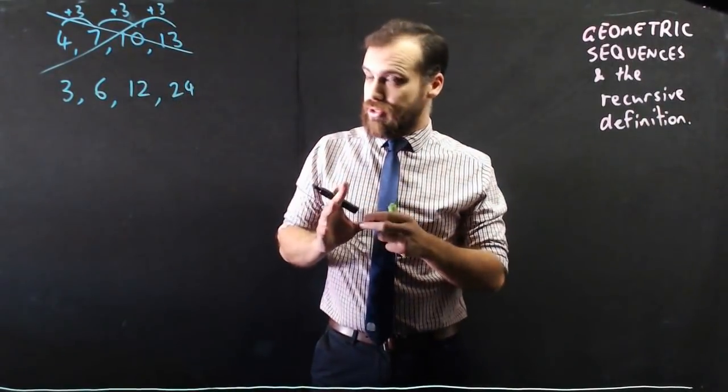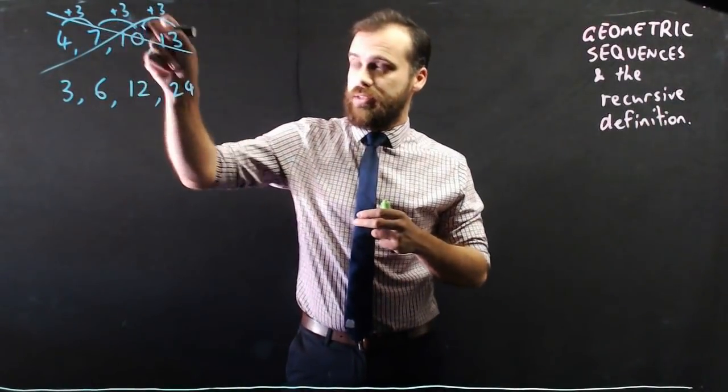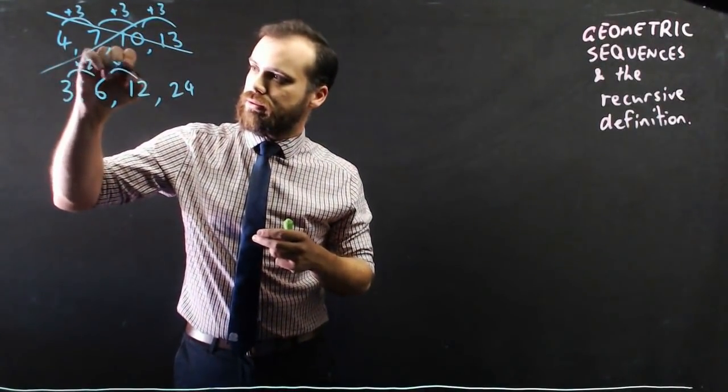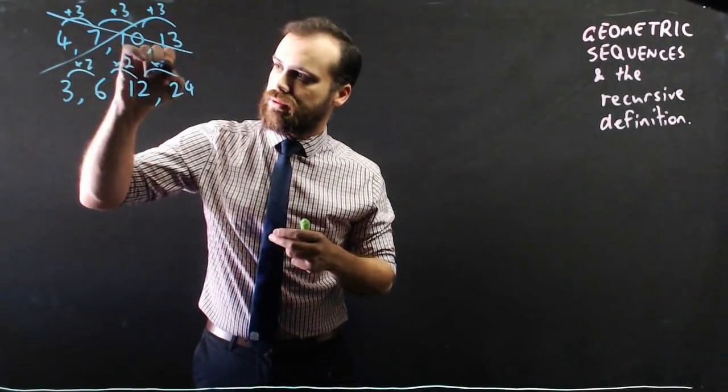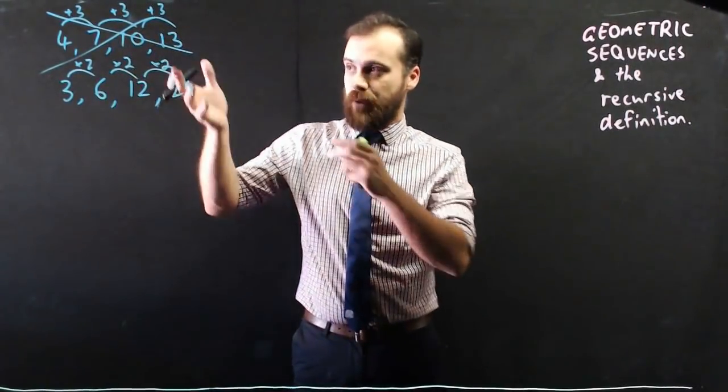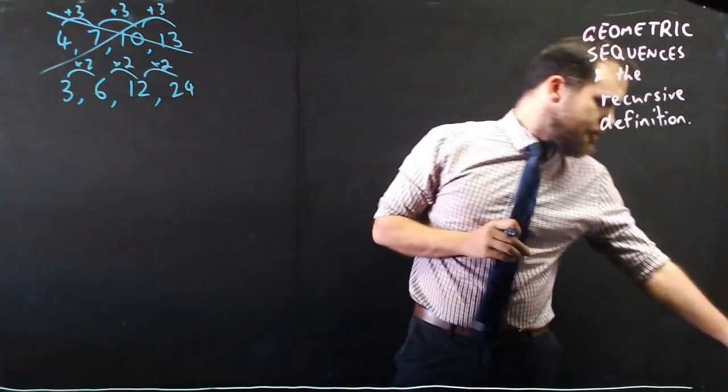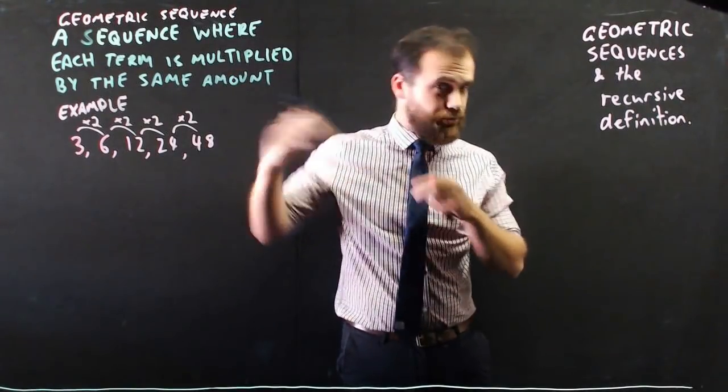Okay, this time it's not a common difference but a common ratio. So every time we're taking it and we're multiplying it by 2. So that's a geometric sequence. So that's what a geometric sequence is right down to definition.